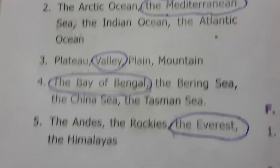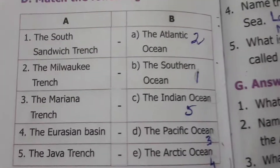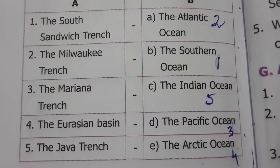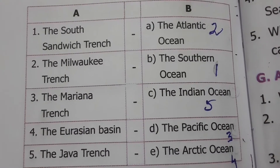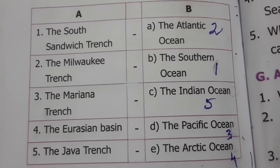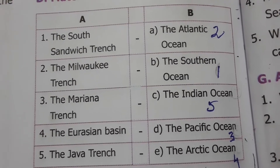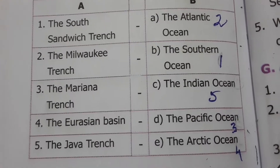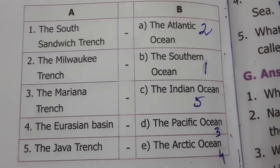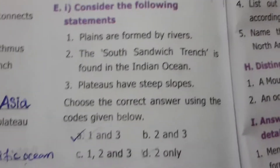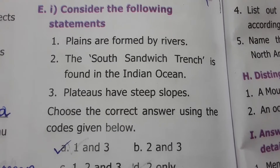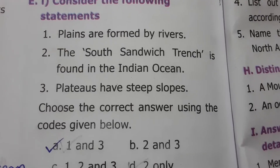Match the following: The South Sandwich Trench is found in the Southern Ocean. The Milwaukee Trench is in the Atlantic Ocean. The Mariana Trench is in the Pacific Ocean. The Eurasian Basin is in the Arctic Ocean. The Java Trench is in the Indian Ocean.